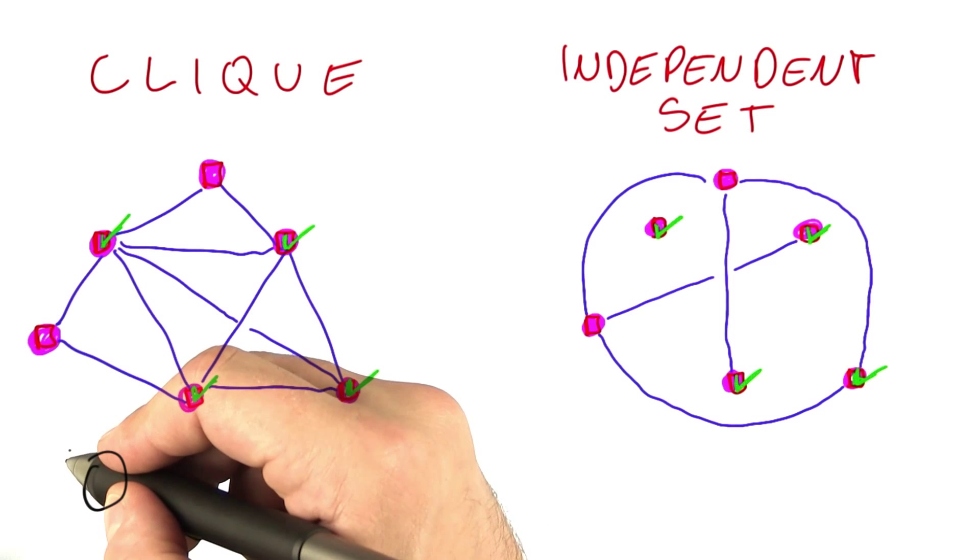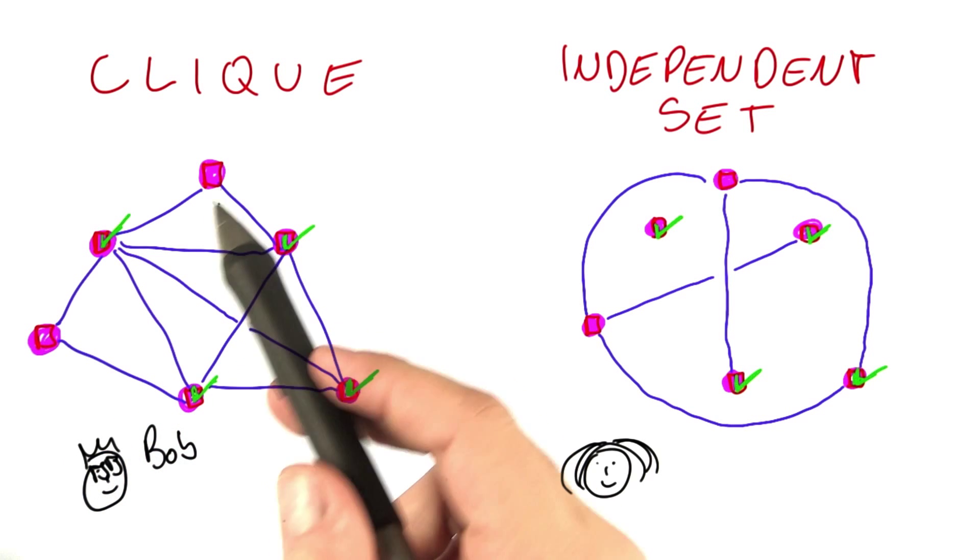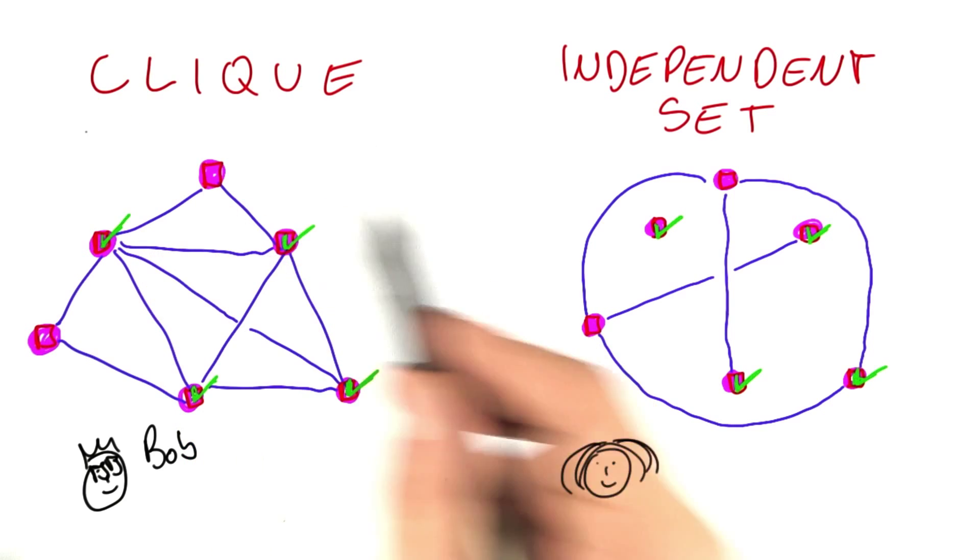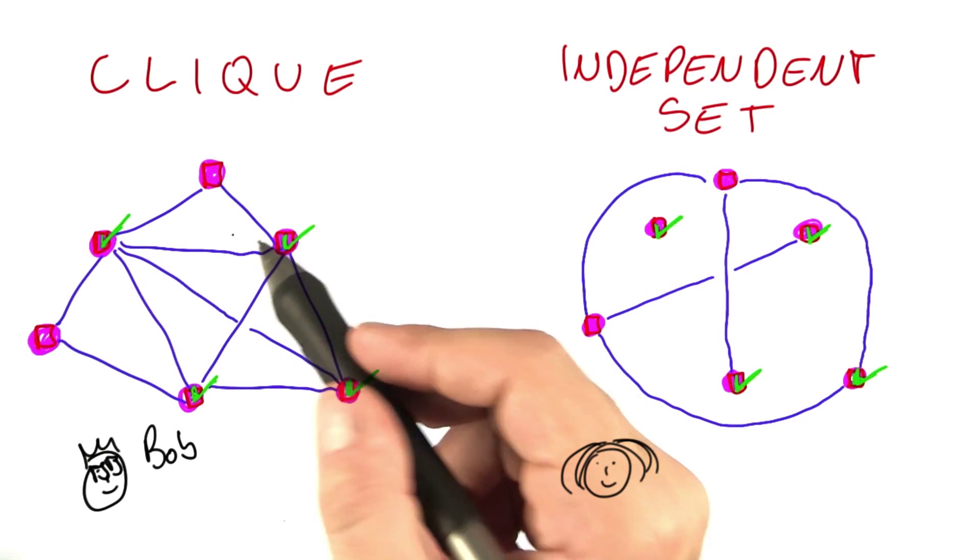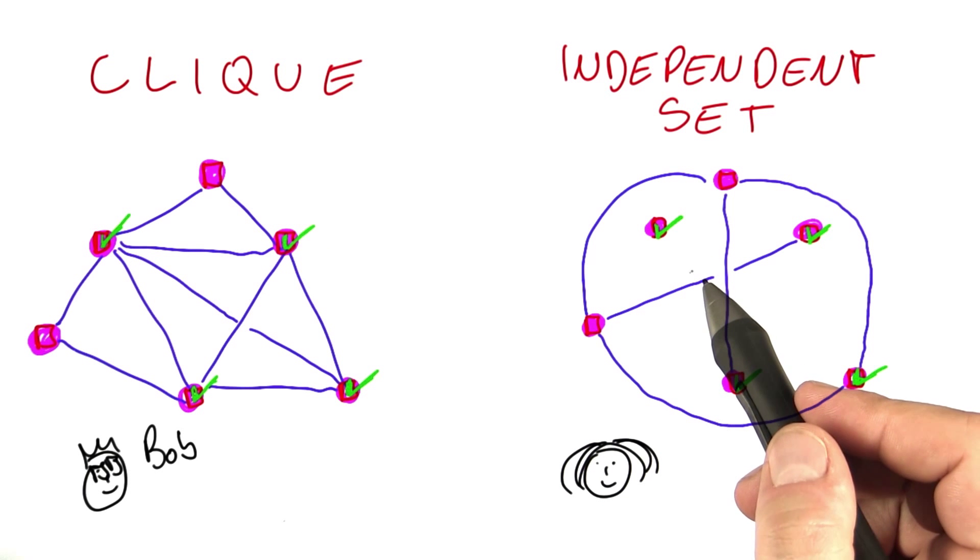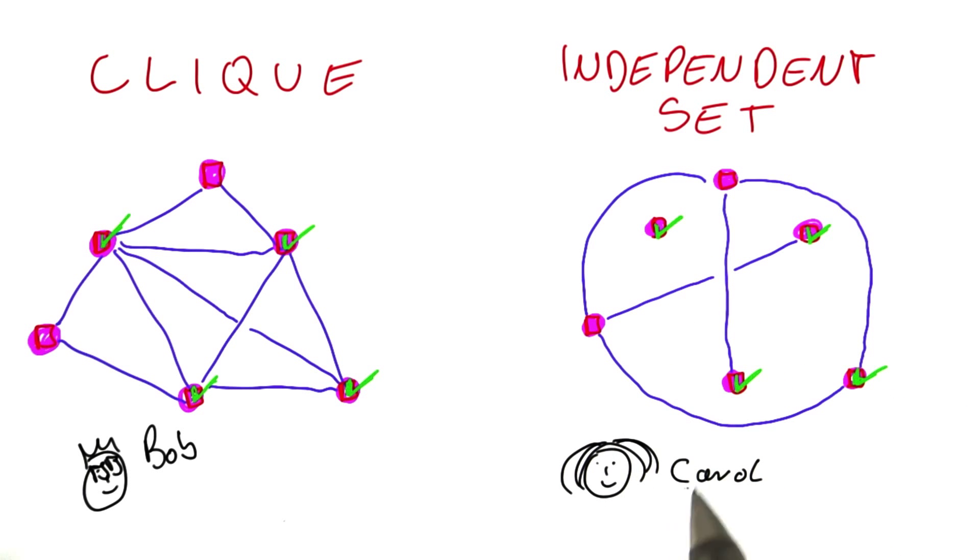This is actually great news for Bob and for Carol. Because if Bob were to find a polynomial time algorithm for clique, so if he were to determine that clique is tractable, then independent set would also be tractable because Carol could just take her network, build the inverse network, then have Bob solve clique on that network, take that same solution for her problem.